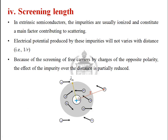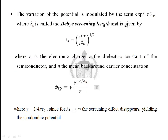The potential is reduced by a factor of e raised to minus r over lambda_s, so the potential varies as (1/r) times e^(minus r / lambda_s), where lambda_s is the screening length or Debye screening length. It can be calculated as: lambda_s equals the square root of (epsilon k T) divided by (e squared n). The screened potential is psi(r) equals gamma times e^(minus r / lambda_s) divided by r, where gamma equals 1 divided by (4 pi epsilon_0).